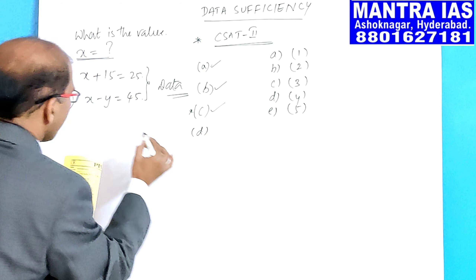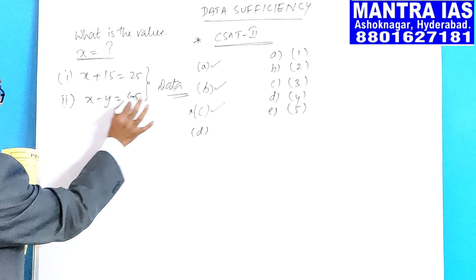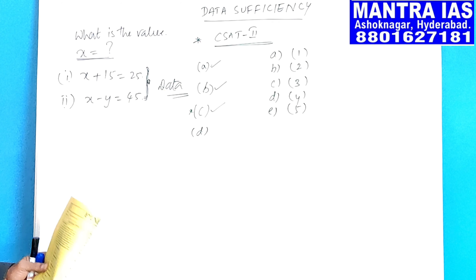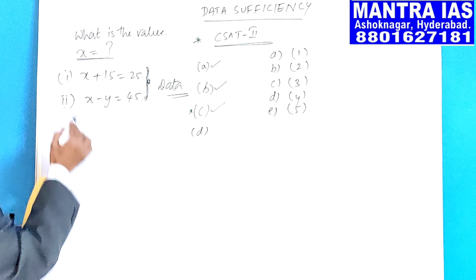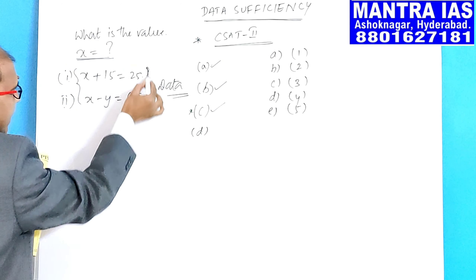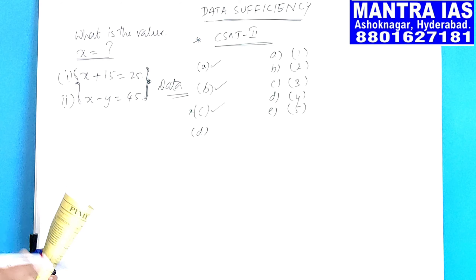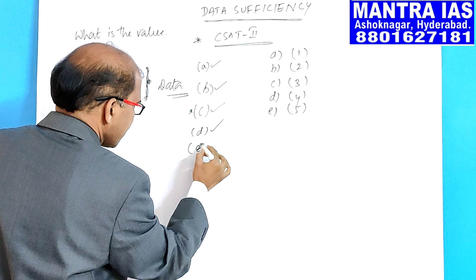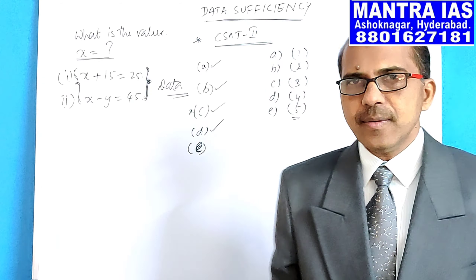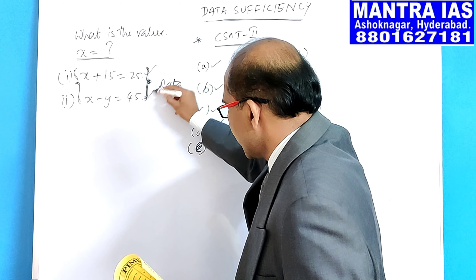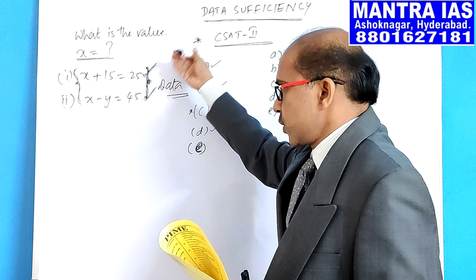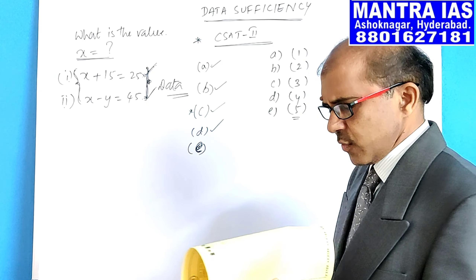Option D means the given data is insufficient to solve the question — you cannot get the answer even after combining both statements. Option E means you get the answer from both statements independently — that is, you get the answer by using the first statement alone AND also by using the second statement alone at the same time.